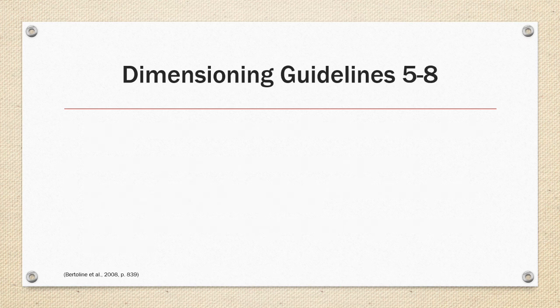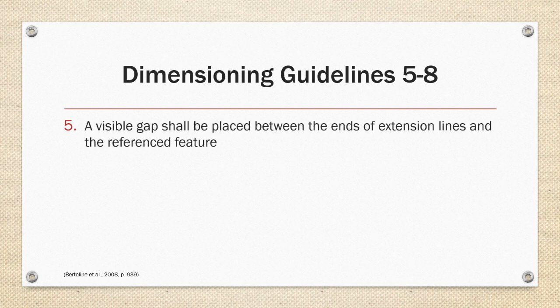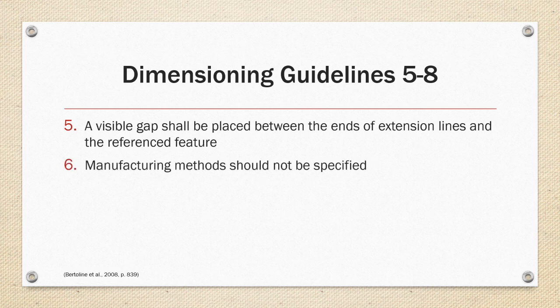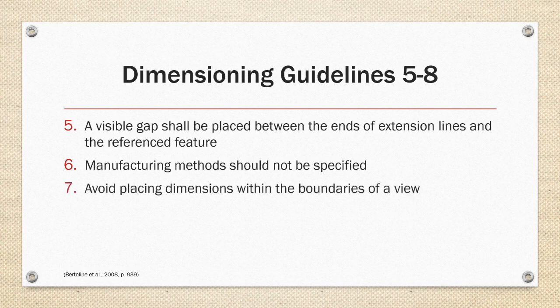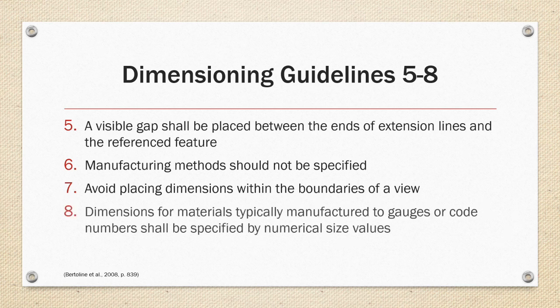Moving on to guidelines five through eight we have five. A visible gap shall be placed between the ends of extension lines and the reference features. Six. Manufacturing methods should not be specified. Seven. Avoid placing dimensions within the boundaries of a view. And eight. Dimensions for materials typically manufactured to a gauge or code numbers shall be specified by numerical size. That means that it should have its physical size and not be listed by its gauge or standard number.